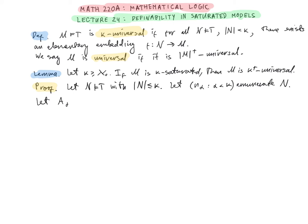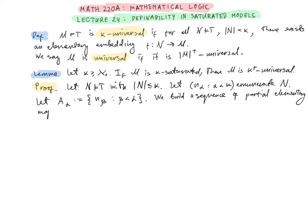We let the set A_α be the set of all elements N_β for β less than α. We build a sequence of partial elementary maps F_0 ⊆ F_1 ⊆ F_2 ⊆ … ⊆ F_α for all ordinals α less than κ.